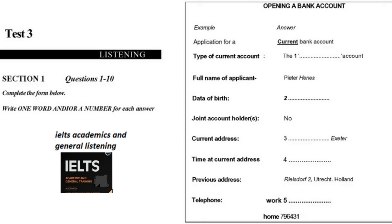The man wishes to apply for a current account, so 'current' has been written in the space. Now we shall begin. You should answer the questions as you listen because you will not hear the recording a second time. Listen carefully and answer questions one to five.